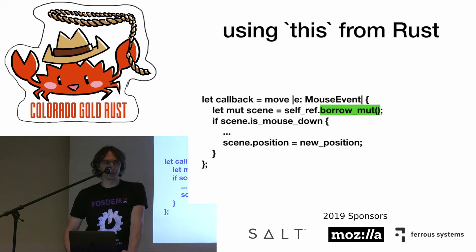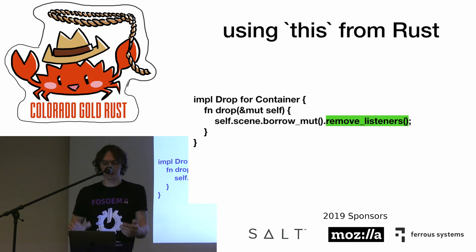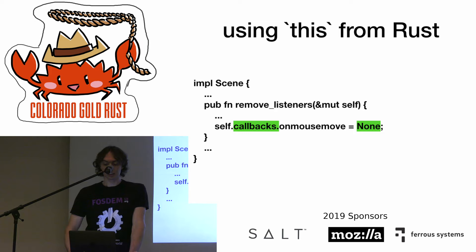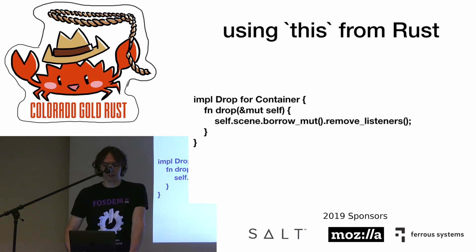Once we've solved the scalability problem, let's handle cleanup — because we have a circular reference, we need to manually drop it. We will do it with a cleanup method. First, we need to unsubscribe from JavaScript. Then make the callbacks no-op to drop the references. Only once all callbacks are cleared do we free the scene and the container.